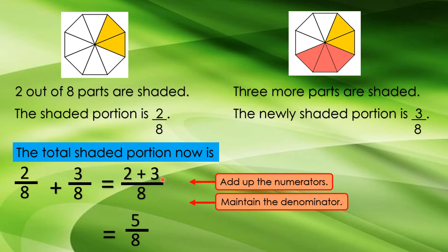So, what's the answer? 2 plus 3 equals 5. Then, copy the denominator. It's very easy, right?